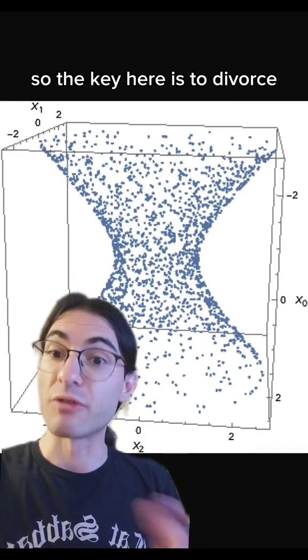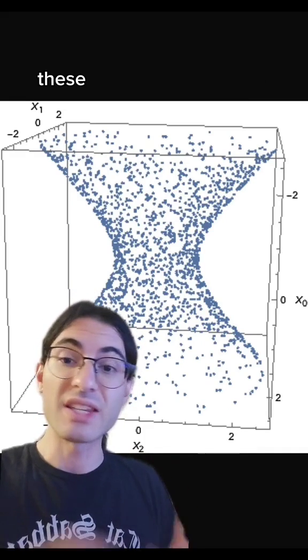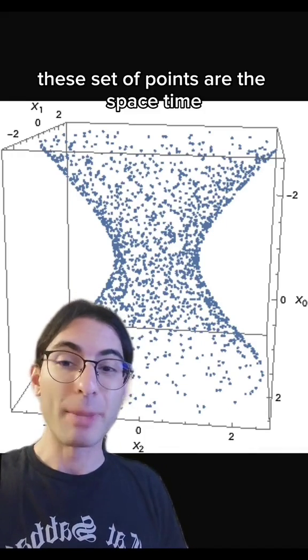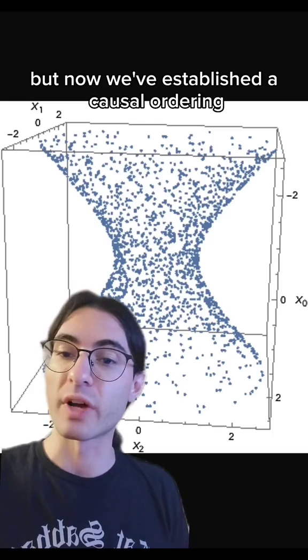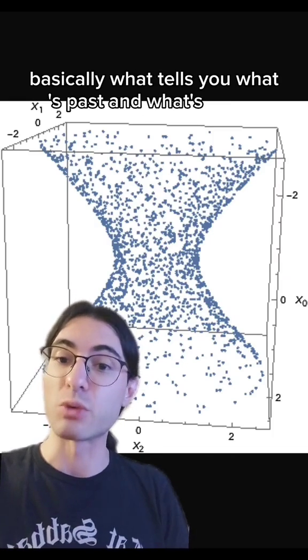So the key here is to divorce this set of points from a background spacetime on which it lives. These set of points are the spacetime. But now we've established a causal ordering, basically what tells you what's past and what's future.